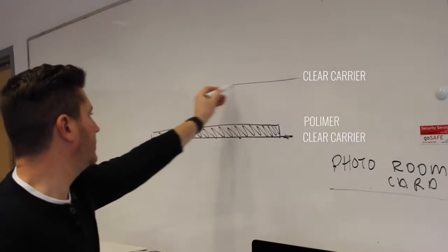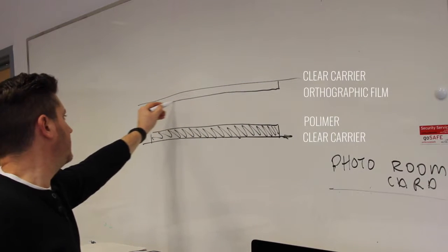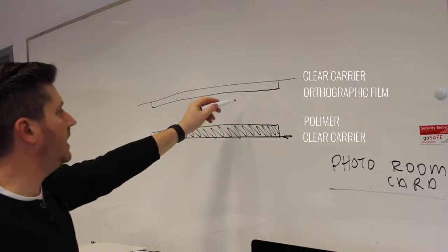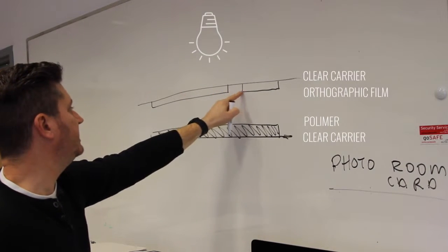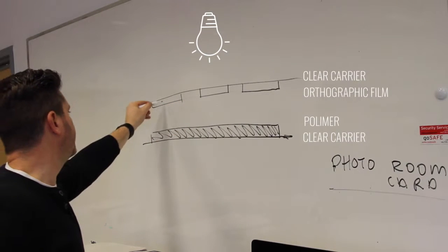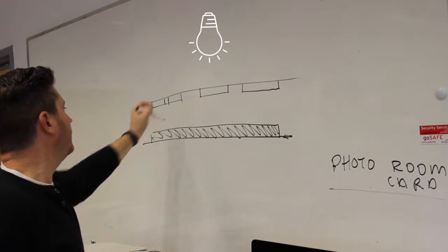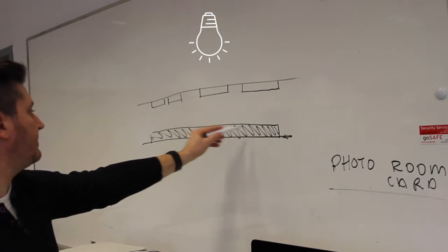Similarly, the ortho film has a clear carrier and the black orthographic material which once exposed will have gaps within the black film that will allow light to go through. What we need to do is make sure that the black film is in contact directly on top of the polymer.